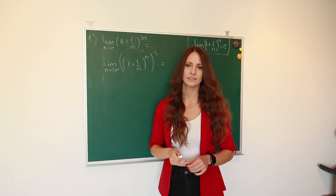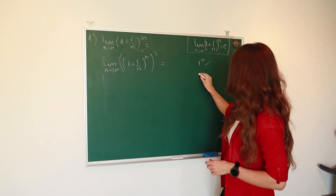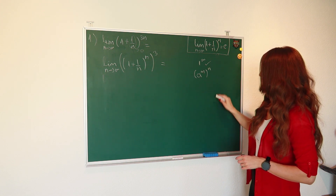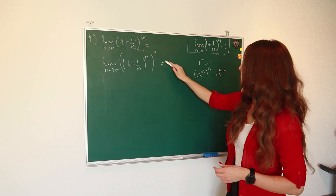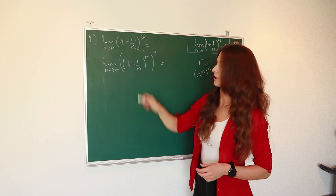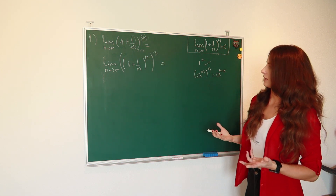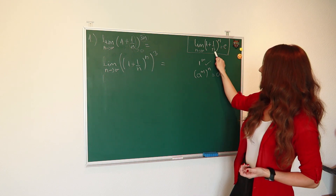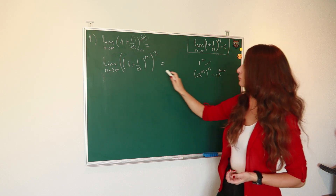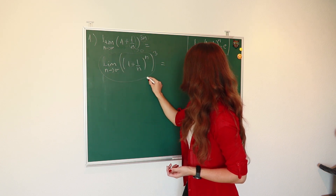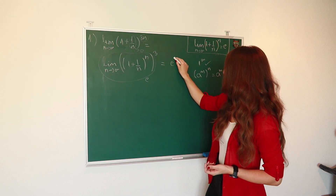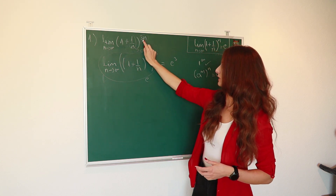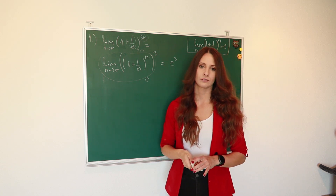Now you may notice we have limit when n approaches infinity of 1 plus 1 over n raised to the power of n — that is exactly our definition, which equals e. So this is our definition, and that means we can replace it with e. Our result is e raised to the third power. So: limit when n approaches infinity of 1 plus 1 over n raised to the power of 3n equals e raised to the power of 3.